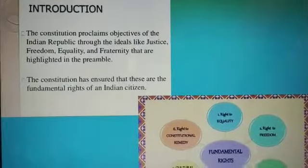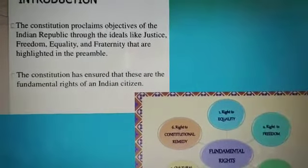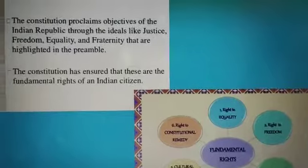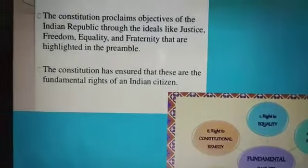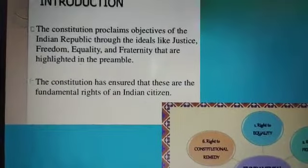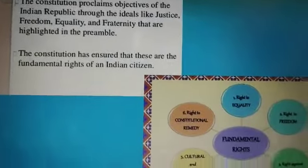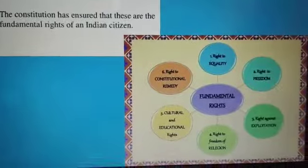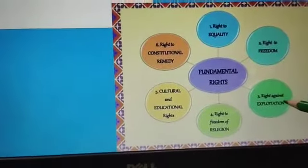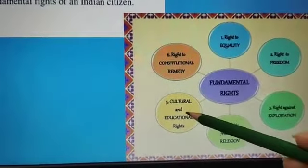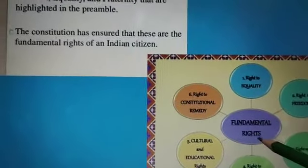Our constitution gave objectives to the people and to the Indian Republic. These objectives, as we have learnt in the last chapter, were justice, freedom, equality, fraternity and many other things. The constitution has also ensured some fundamental rights for Indian citizens: the right to equality, right to freedom, right against exploitation, right to freedom of religion, cultural and educational rights, and right to constitutional remedy.